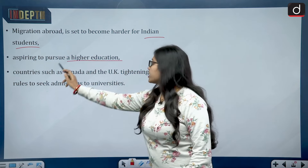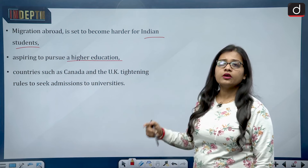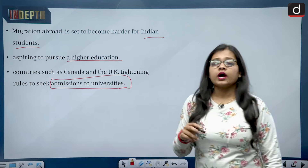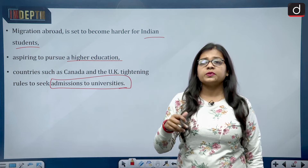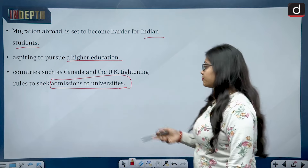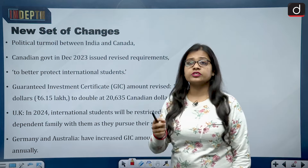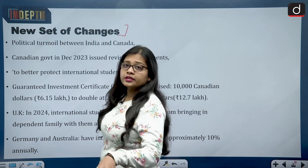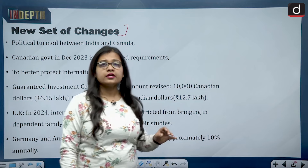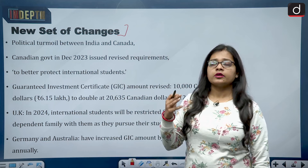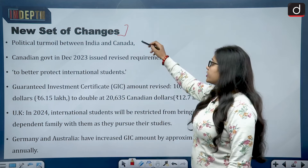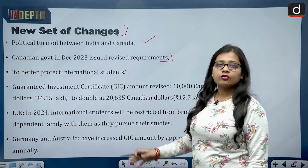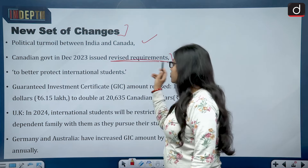A student goes out either to get education or to get work. Countries such as Canada and the United Kingdom have tightened rules to seek admissions to universities. As we all know, relations between India and Canada have been under scanner for the last few months. Adding fuel to this political turmoil, the Canadian government in December 2023 issued revised requirements to better protect international students.